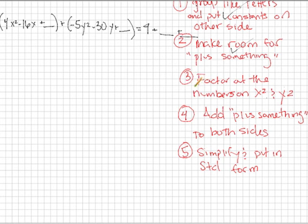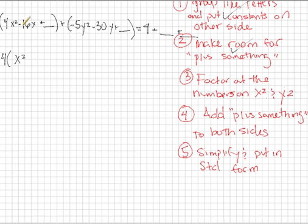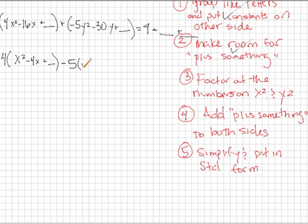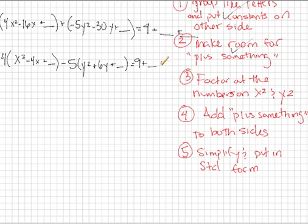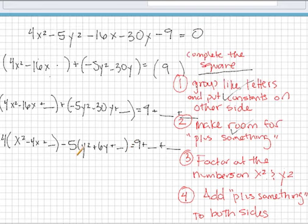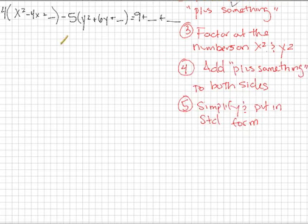Step number three: we have to factor out the numbers in front of X squared and Y squared — I don't want any numbers in front of these. So I'm going to factor the 4 out of the X group, so 4 disappears on X squared and the 16X becomes negative 4X, still plus something. For the Y group, there's a negative 5 in front, so I'm factoring out a negative 5. That gives Y squared, and factoring negative 5 from negative 30Y gives positive 6Y, plus something. Step three is done.